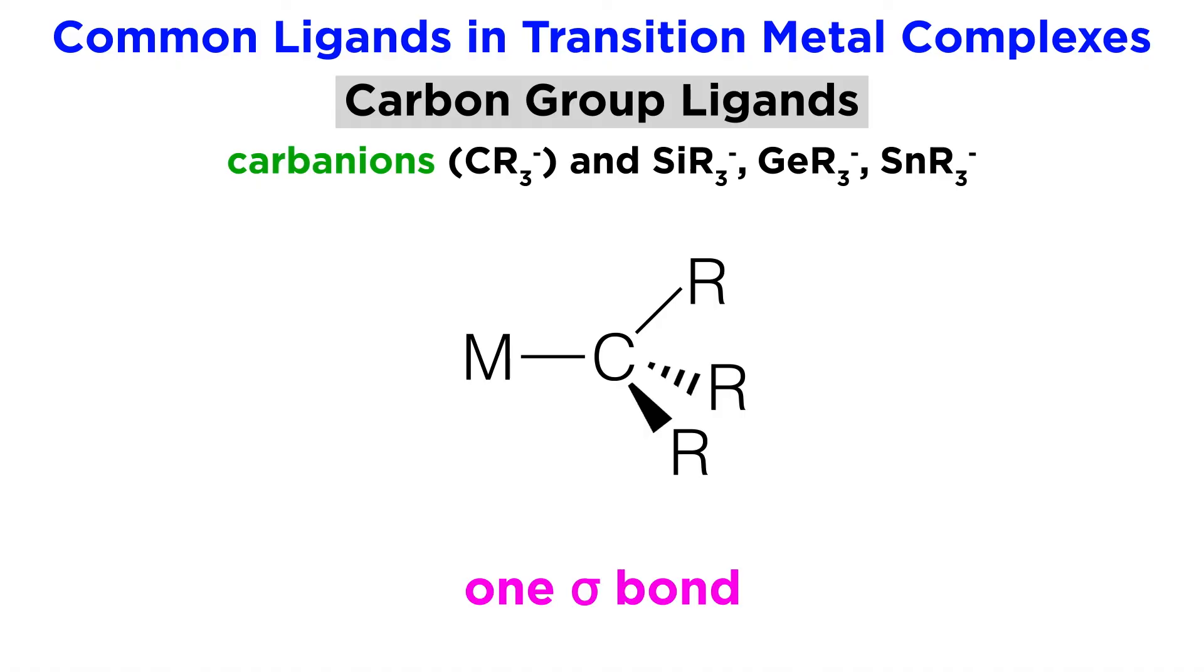Carbanions will donate the one lone pair to form a sigma bond, as will analogous ligands replacing carbon with silicon, germanium, or tin.